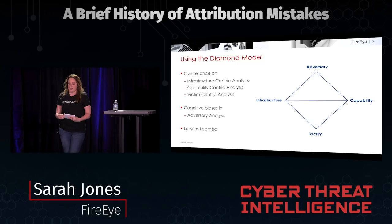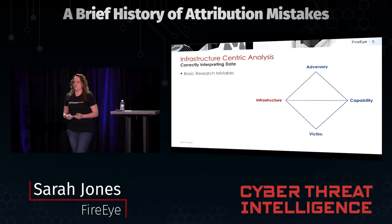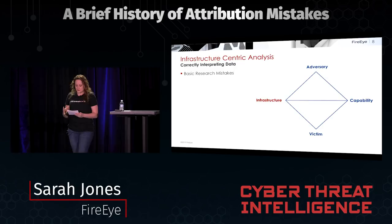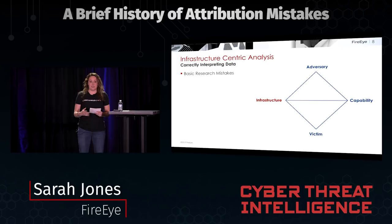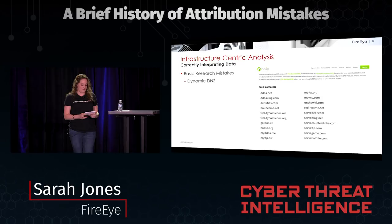We're going to start with infrastructure. Infrastructure-centric analysis has some basic research mistakes I want to go over. Most of the mistakes I observed when looking at historical examples stemmed from a fundamental misunderstanding of the data we're trying to interpret. The first example should look pretty familiar: these are dynamic DNS providers. They're very popular with a number of different APT actors, and incorrectly interpreting this data as actor-controlled infrastructure rather than something that can be shared would lead us to inaccurate conclusions.